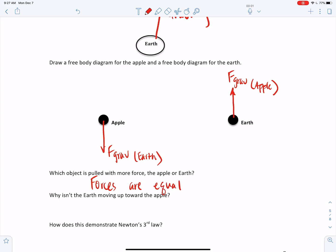Why isn't the earth moving up towards the apple then? Because even though the forces are equal, the masses are not equal. The mass of the earth is huge compared to the mass of the apple. So this little gravitational force of the apple on the earth is not going to be nearly enough to move the earth. So the earth is too massive.